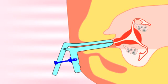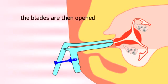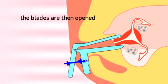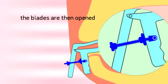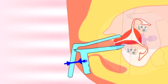The blades of the DNB Cervical Clamp are then opened by turning the outer nut clockwise, thereby allowing good visibility of the cervix.